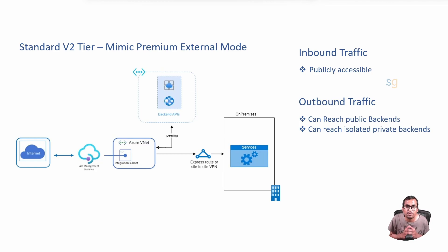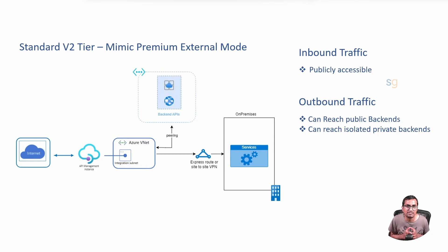This integration opens up a range of possibilities for backend connectivity. If your VNet is linked to on-premises systems through an Express Route or VPN, Standard V2 can securely access on-premises backend systems. While the gateway and other endpoints in Standard V2 remain publicly accessible, you can enhance security significantly by fronting them with an Application Gateway. The integration with Application Gateway allows for the activation of Web Application Firewall, providing an extra layer of security and safeguarding your applications against vulnerabilities and attacks.